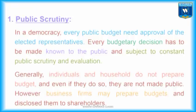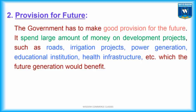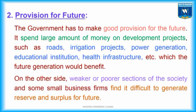Point No. 2 — Provision for Future. The government has to make good provision for the future. It spends large amounts of money on development projects such as roads, irrigation projects, power generation, educational institutions, and health infrastructure, from which future generations would benefit. On the other side, weaker or poorer sections of society and some small business firms find it difficult to generate reserves and surplus for the future.